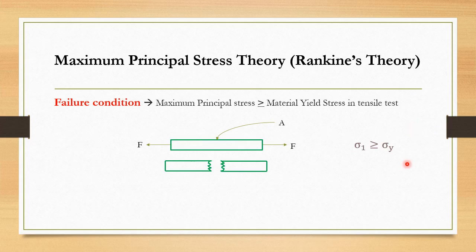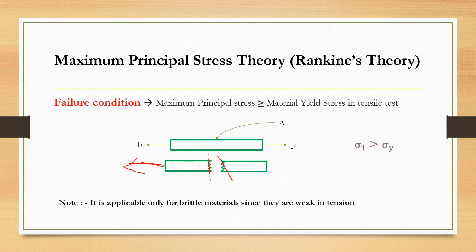It is worth mentioning that here I am assuming the material to be brittle. For a ductile material, the plane of failure is roughly at 45 degrees, not at 90 degrees as shown for brittle materials. This theory is applicable only for brittle materials, since they are weak in tension. For ductile materials, which are weak in shear, we need a theory that considers shear stress.